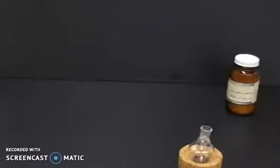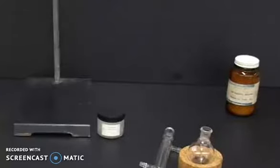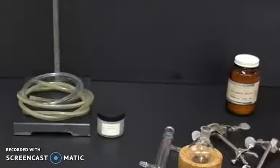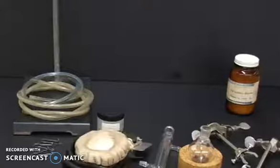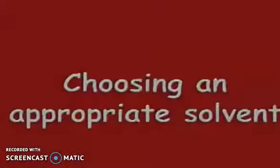To carry out a reflux you need a round bottom flask, a stir plate and stir bar, boiling stones, a condenser, grease, two extension clamps, two pieces of thin-walled rubber tubing, three hose clamps, a heating mantle, and iron rings.